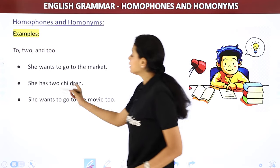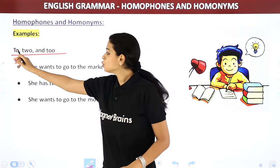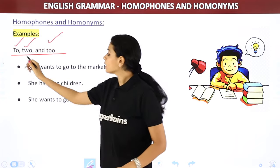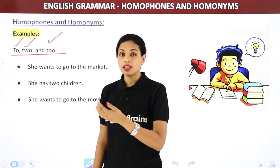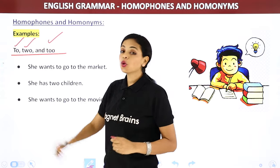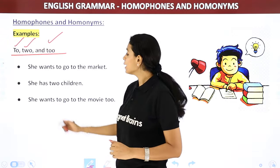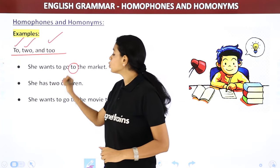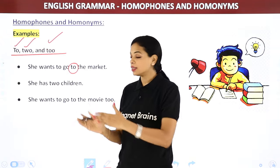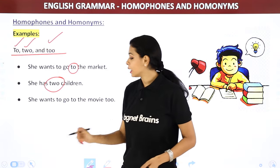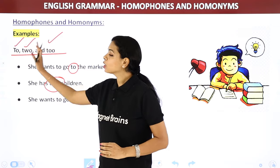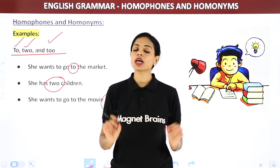Examples of homophones — 'to,' 'two,' and 'too.' All three sound the same. 'To' means going toward something — 'I'm going to the mall.' 'Two' means the number 2 — 'she has two children.' 'Too' means 'also' — 'she wants to go to the movie too.' All three sound the same but have different spellings and different meanings.